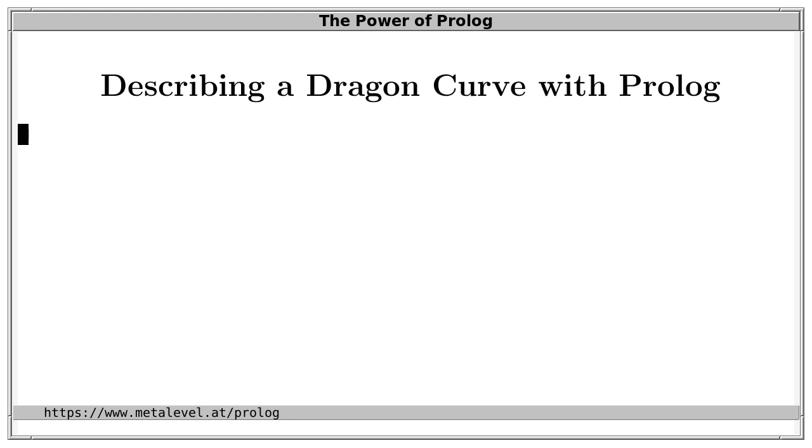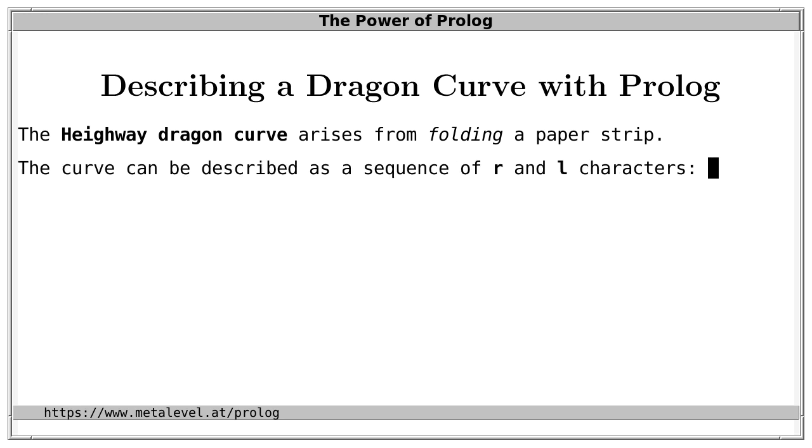Let's use Prolog to describe a dragon curve. And I say a dragon curve because there are several of them. So let's focus on the most famous one, namely the Heighway dragon curve, named after John Heighway. And it arises from folding a paper strip. And this curve can be described as a sequence of L and R characters.